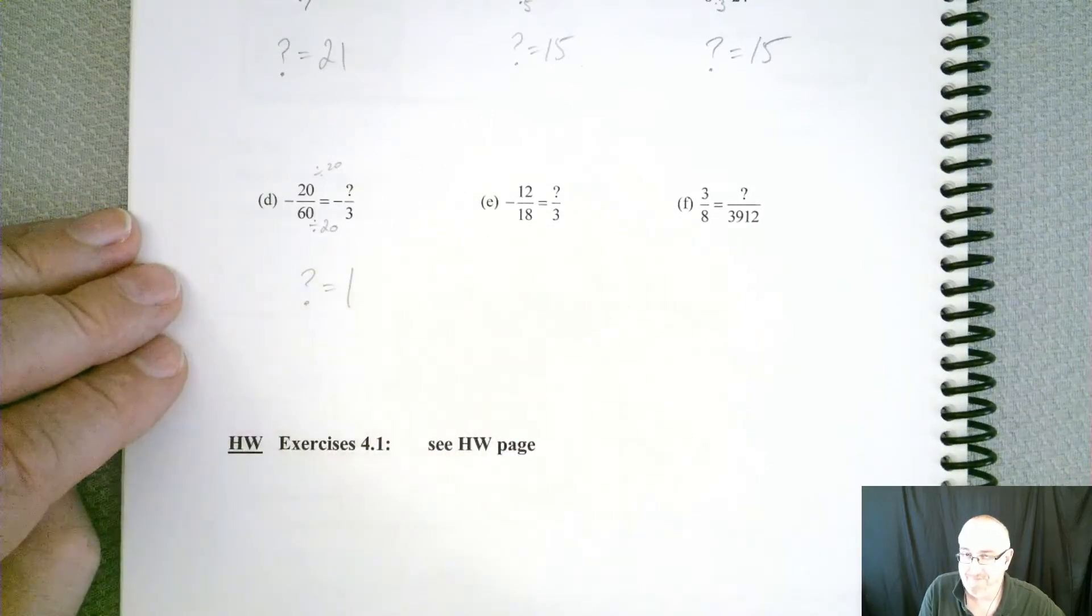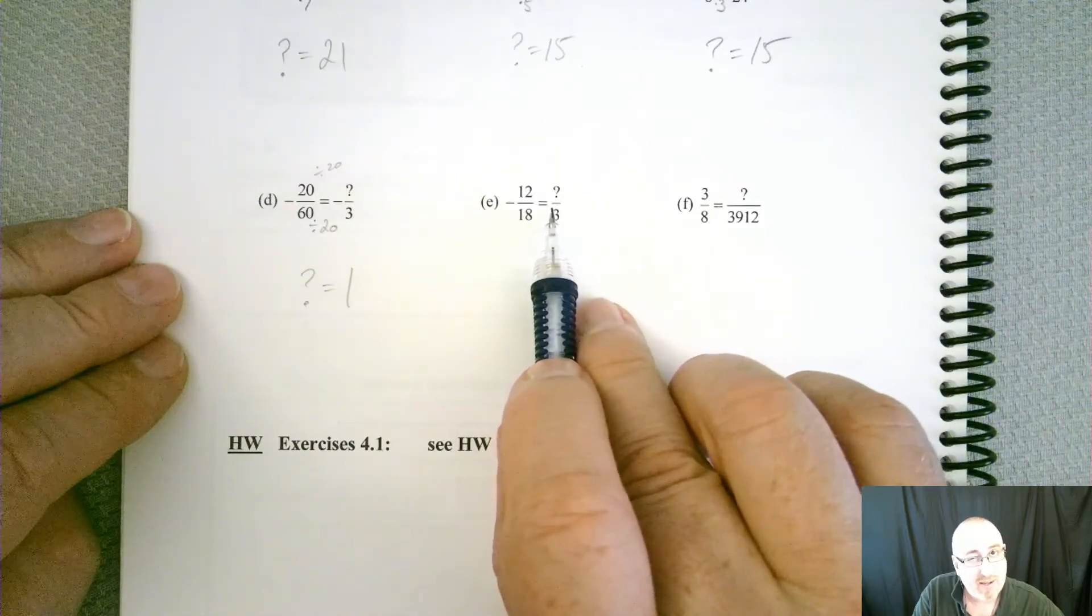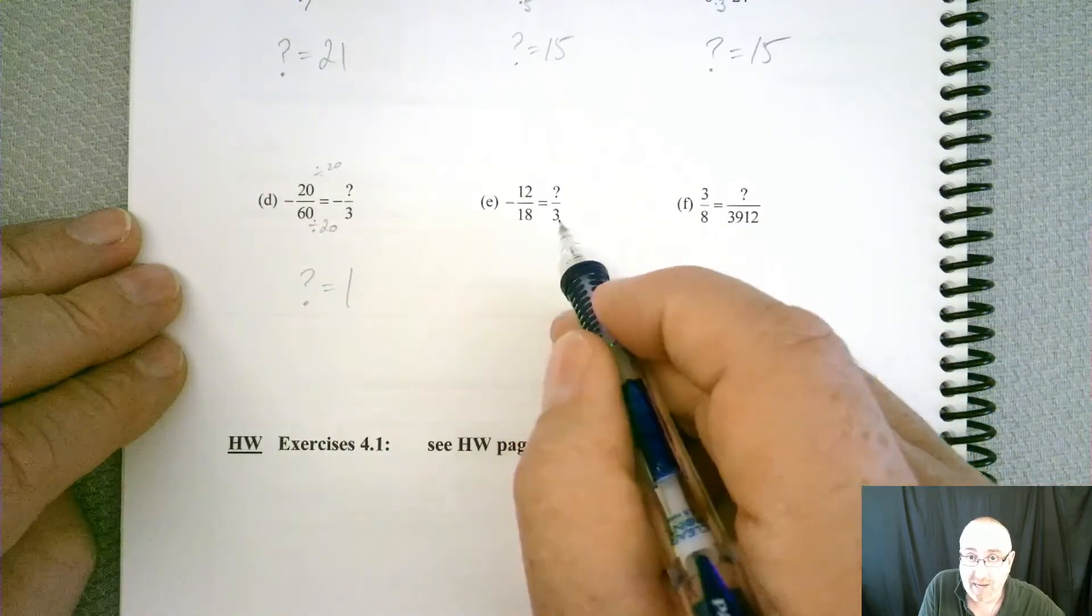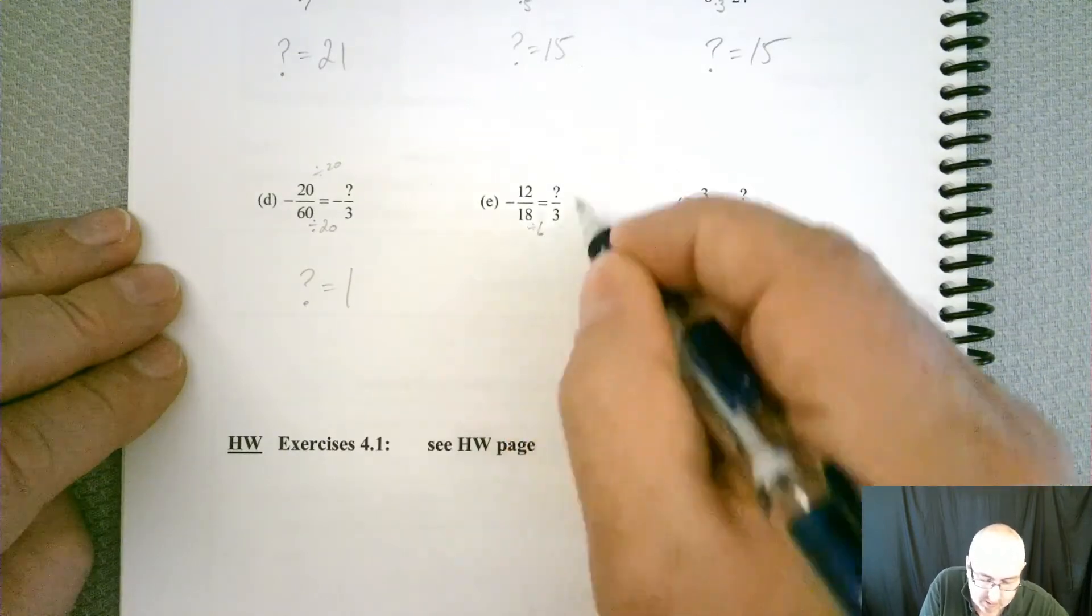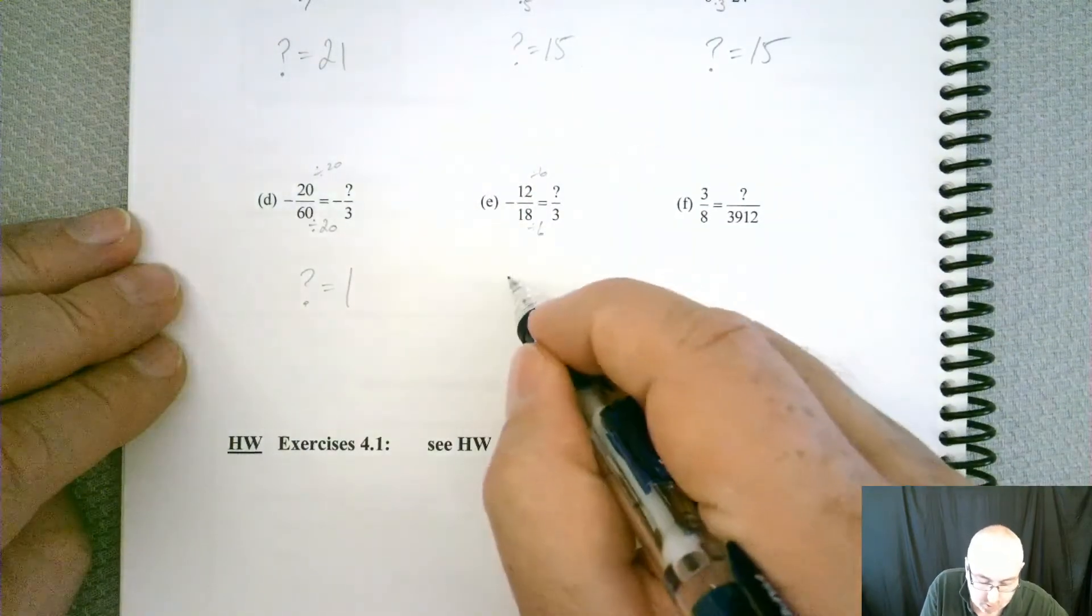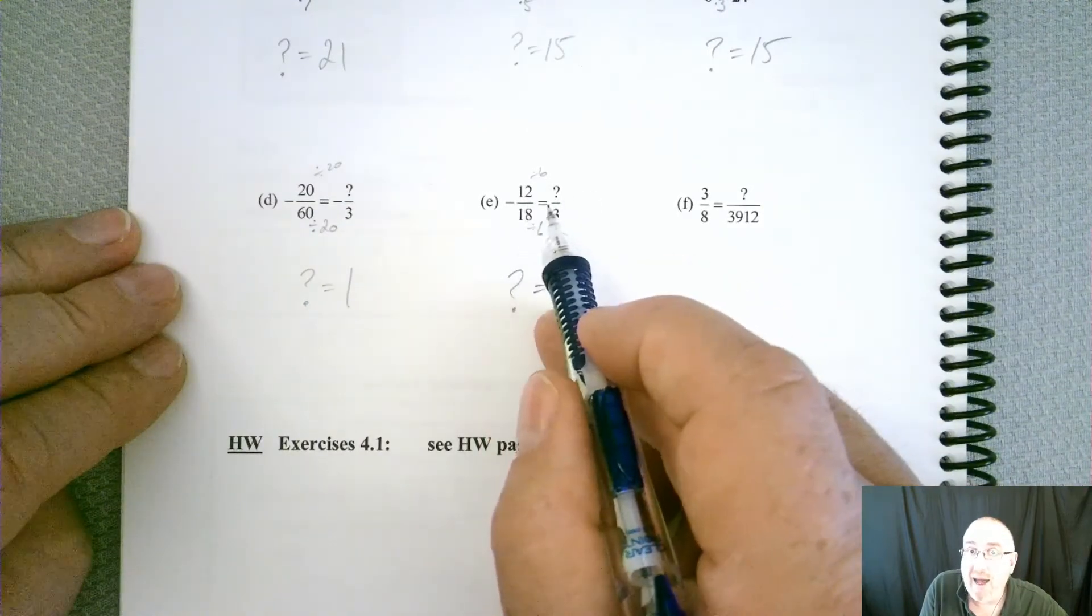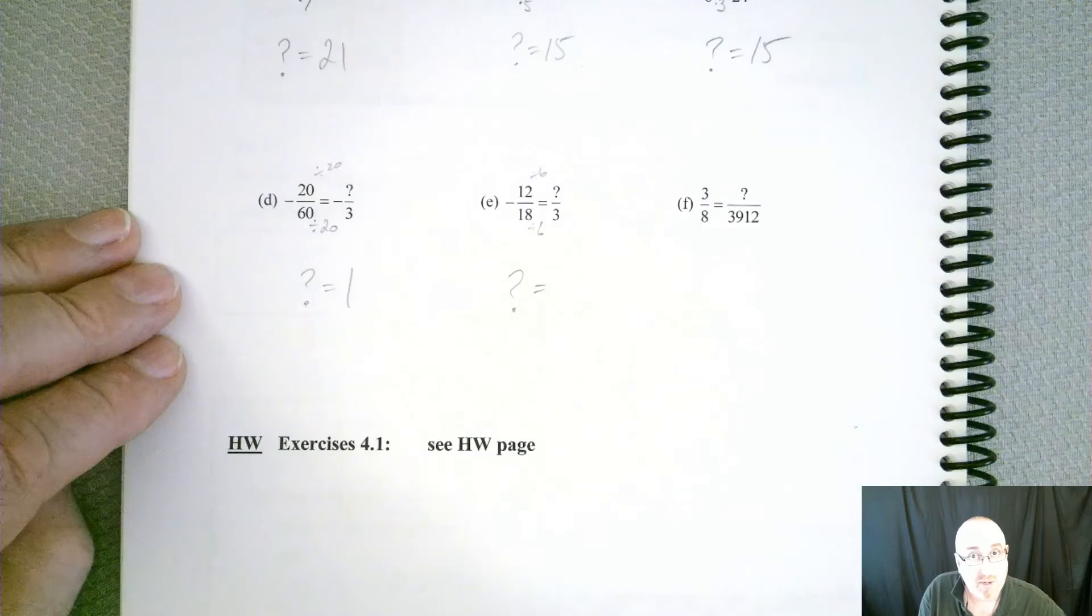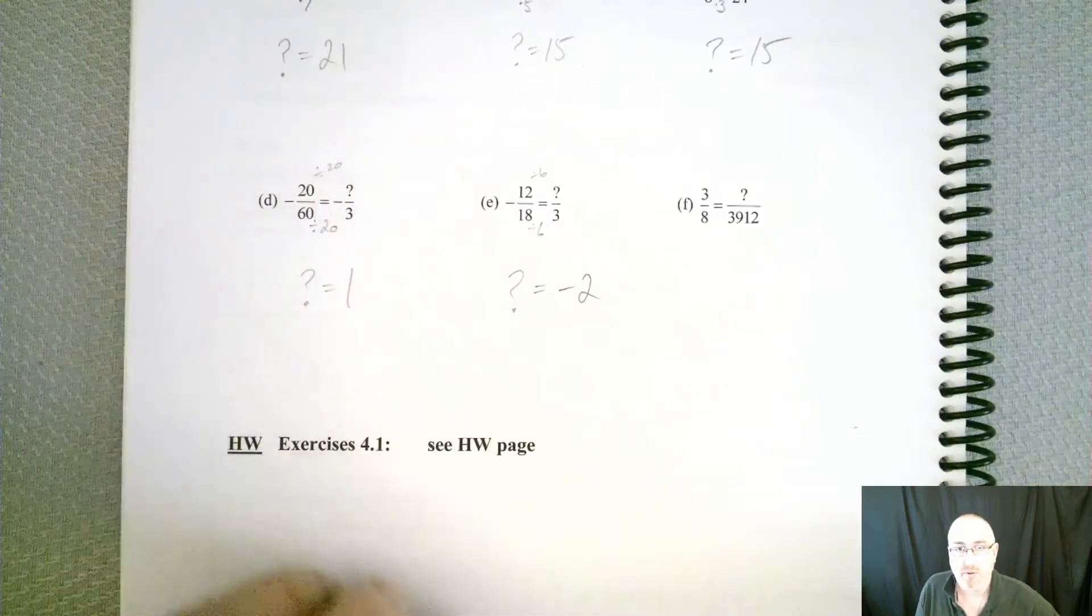But let's look at the next one. We had a negative on this side, but we do not have a negative on this side. So that does mean something. But let's first look at the number change. We're going from 18 down to 3, so we've got to divide by 6. So we've got to divide by 6 on both sides. That's going to give me a 2, but because I'm missing the negative, I have to include that in my answer now. So you've got to be careful. Sometimes they're going to include it, and sometimes they're not. So in this case, we'd need to include it. So negative 2.